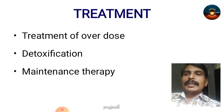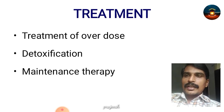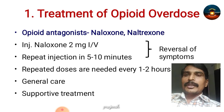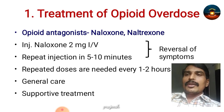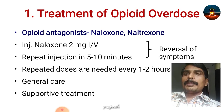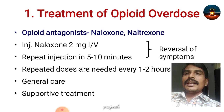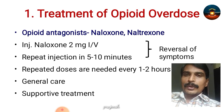The treatment includes three important aspects: treatment of overdose, detoxification, and maintenance therapy. For opioid overdose, the opioid antagonists used are naloxone and naltrexone. Injection naloxone 2 mg IV is given and repeated every 5 to 10 minutes until reversal of symptoms; repeated doses are needed every 1 to 2 hours. General supportive care is also part of overdose treatment.